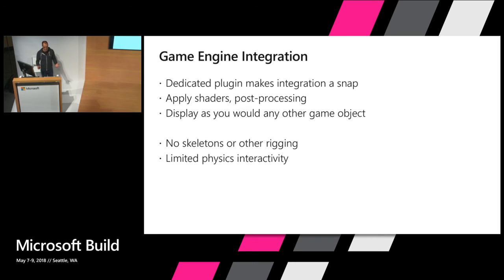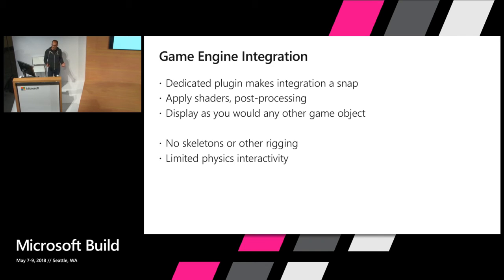Now it's time to integrate into a game engine. Our dedicated plug-in makes integration a snap. You can apply shaders and post-processing and treat them just as you would any other game object. I should point out that although these are human holograms, we do not support skeletons or other rigging that you could use for animation. There's also limited physics interactivity because our plug-in delivers the assets — the meshes and the textures — at a point in the pipeline in the GPU after which they could be used as colliders, so you cannot natively use these things as colliders.